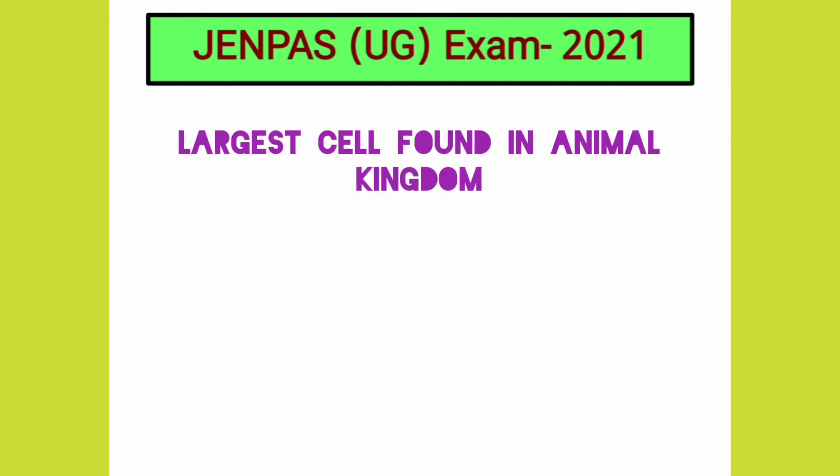What is the largest cell found in the animal kingdom? The largest cell is the egg cell of the ostrich.